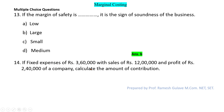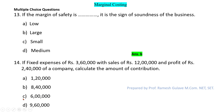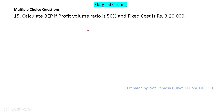The next question gives fixed expenses of ₹3,60,000, sales of ₹12,00,000, and profit of ₹2,40,000, and asks to calculate contribution. Since variable cost is not given, we use the formula: contribution equals fixed cost plus profit. So contribution equals ₹3,60,000 plus ₹2,40,000 equals ₹6,00,000. Option C — ₹6,00,000 — is the right answer.